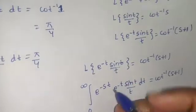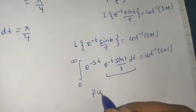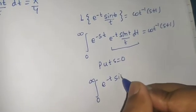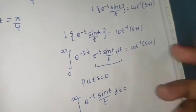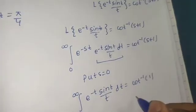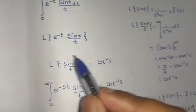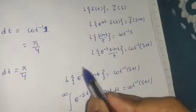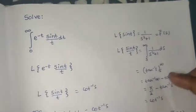Now I want just the integral without the e^(-st) factor, so put s = 0. When you put s = 0 on the LHS it simplifies to the integral from 0 to infinity of e^(-t) sin(t)/t dt, and on the RHS putting s = 0 gives cot⁻¹(0 + 1) = cot⁻¹(1) = π/4. So whether you calculate Laplace for the complete expression and put s = 0, or just Laplace of sin(t)/t and replace s by 1, both give the integral value as π/4.